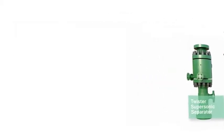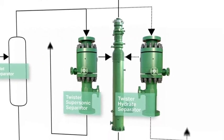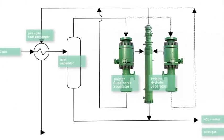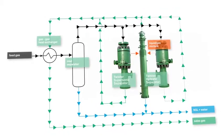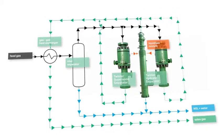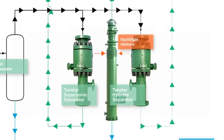The Twister separator system safely and sustainably addresses your gas separation needs. Using centrifugal forces to effectively condense and separate water and heavy hydrocarbons from natural gas, the system delivers significant reductions in both capital and operating costs.